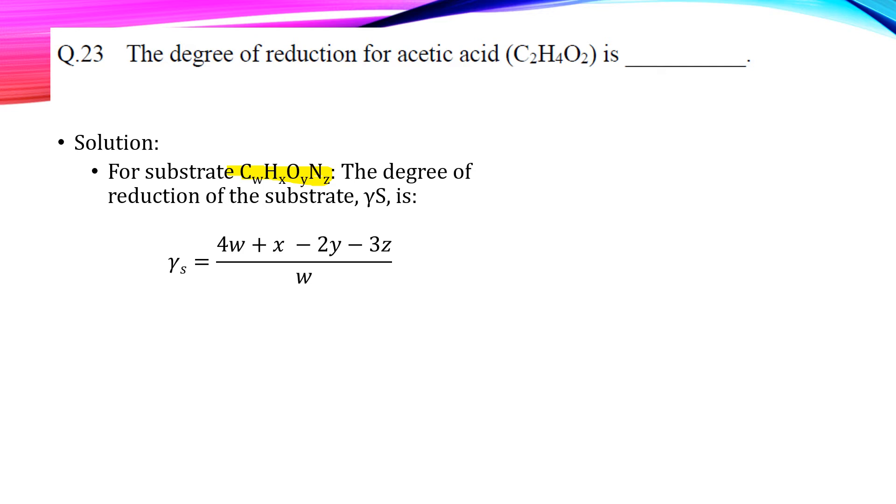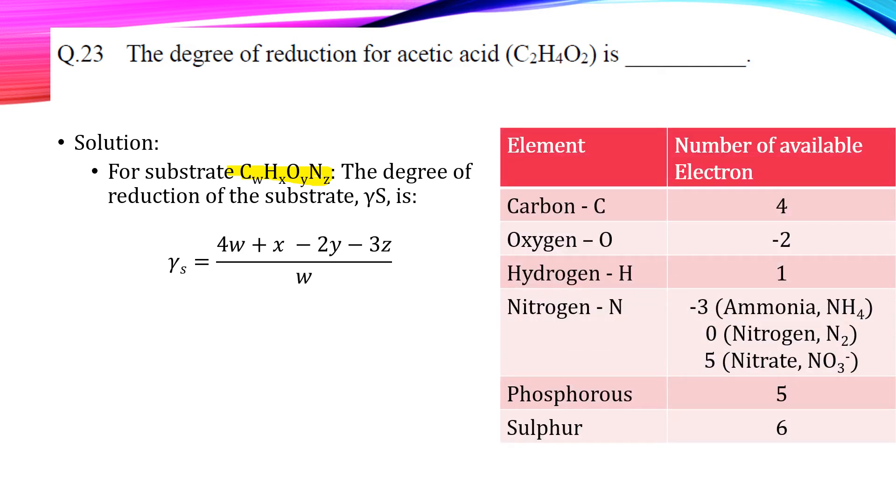These values show available electrons that would be transferred to oxygen upon oxidation of compound to CO2, H2O and NH3 as shown in this table.